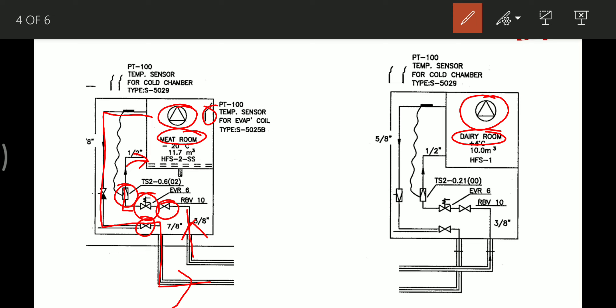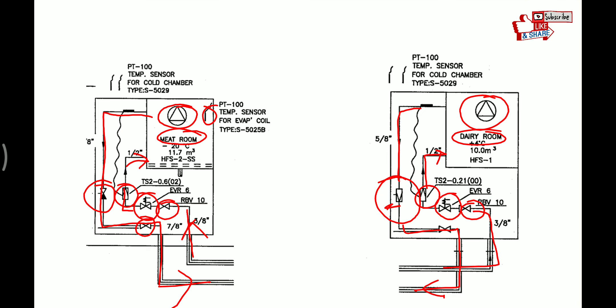In the dairy or veg room, the refrigerant also enters through manual valves, then through a thermostatically controlled solenoid valve, then the expansion valve, then the evaporator coils, and back to the system. The main difference between the two systems is that in the dairy room or veg room there is a constant pressure valve or back pressure valve, whereas in the meat room or fish room there is only a non-return valve. These back pressure valves are spring-loaded and maintain a constant pressure inside the evaporator.